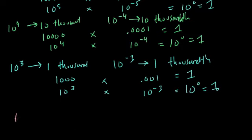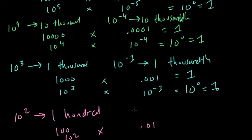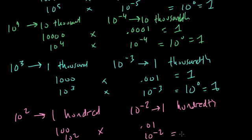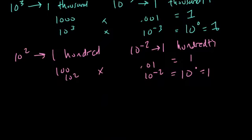Now we're getting to more familiar numbers. Here we have 100, 10 squared, a 1 with two zeros. Multiply this by 0.01 - that's the inverse. 10 to the negative 2 is 1 hundredth. 10 to the negative 2 times 10 to the 2 is 10 to the 0, or 1. 100 times 0.01 is 1.